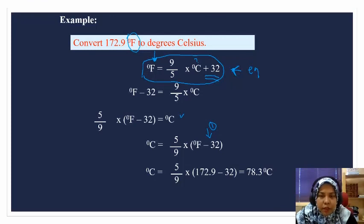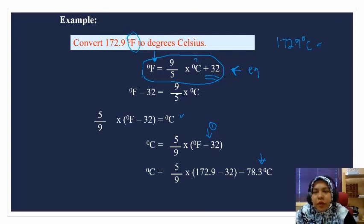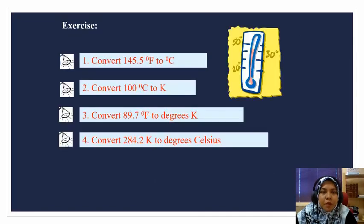You have 172.9. Try using your calculator: 172.9 minus 32, after that times five over nine. You will get the temperature in degree Celsius is 78.3 degrees Celsius. So 172.9 degrees Fahrenheit is actually equivalent to 78.3 degrees Celsius.